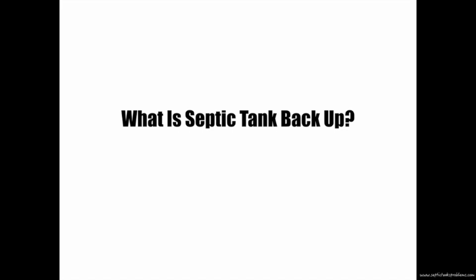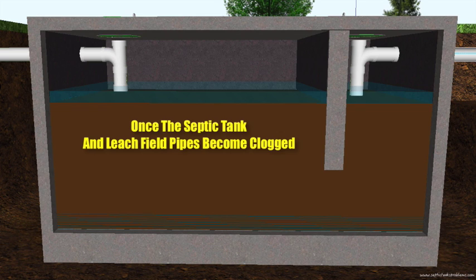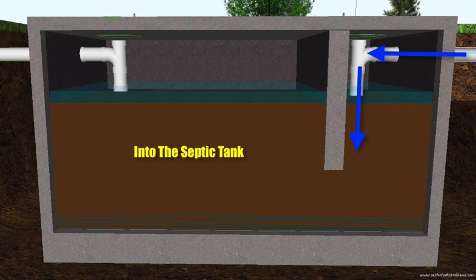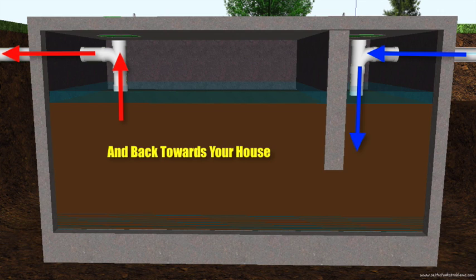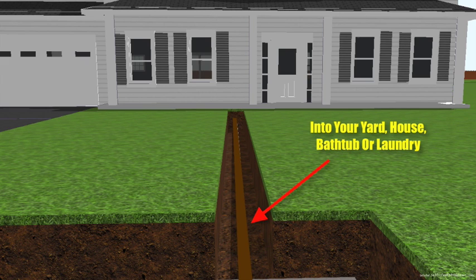So what is septic system failure? Once the drain field pipes become clogged with sludge, the wastewater backs down the pipes into the septic tank, and from the septic tank it backs up toward your house — into the kitchen, into the yard, into the bathtub or laundry. This is called septic system failure.